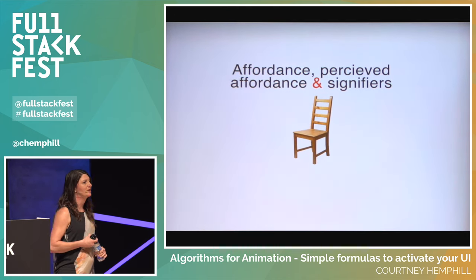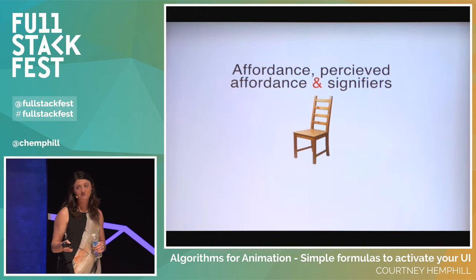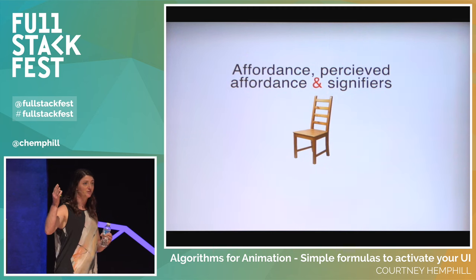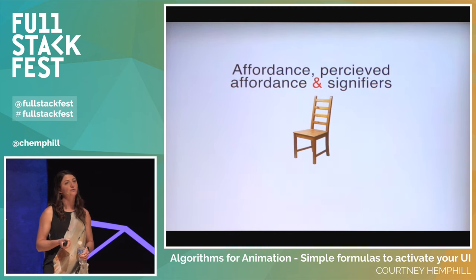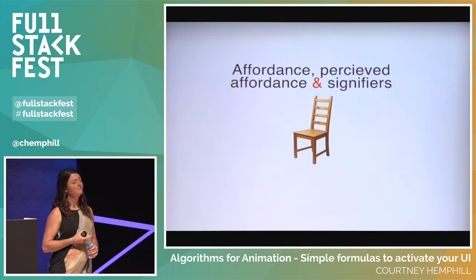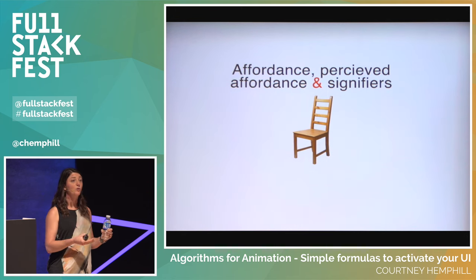One of the basic tenets around psychology is this notion of affordance. As humans, you can look at a chair and afford a use for it — you know you can sit in it, use it to reach a book on a shelf, and you know if you pick it up from the back it will swing. Perceived affordance is something Don Norman brought up in his book 'The Design of Everyday Things' — taking things we know from the real world and putting them into a digital form to tell users what to do.